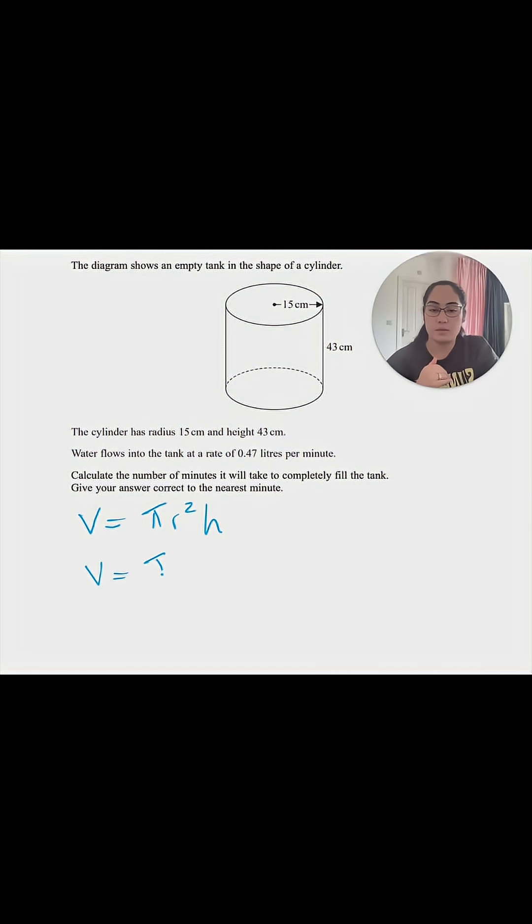If we put in the numbers that we know, volume equals π multiplied by 15 squared multiplied by 43. If we put that into a calculator, we get 30,394.91 rounded to two decimal places.